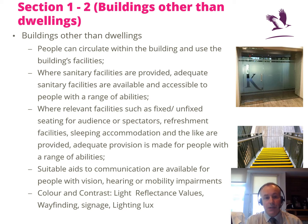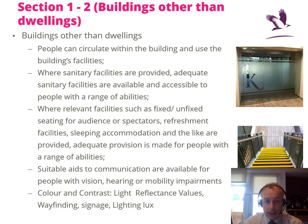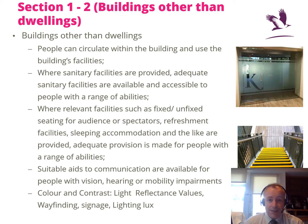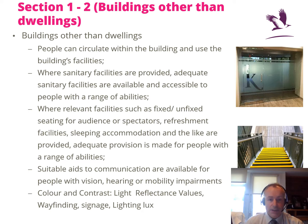Looking at buildings other than dwellings, people must be able to access, circulate within, and use the building's facilities. Regarding sanitary facilities, where provided, there should be adequate facilities accessible to people with a range of abilities. These accessible facilities should not be placed way down the back — they should be anti-discriminatory, positioned beside or near the existing sanitary facilities.